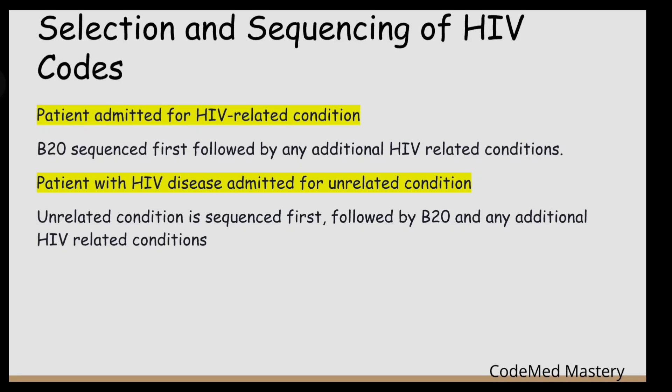To summarize sequencing: a patient admitted for HIV — B20 is sequenced first, followed by any additional HIV-related conditions. A patient with HIV admitted for an unrelated condition — the unrelated condition is sequenced first, followed by B20.